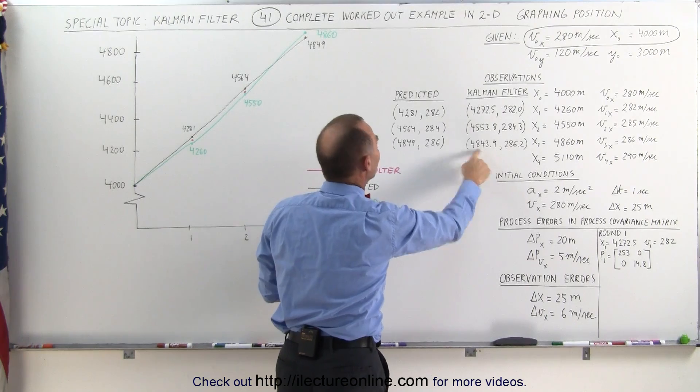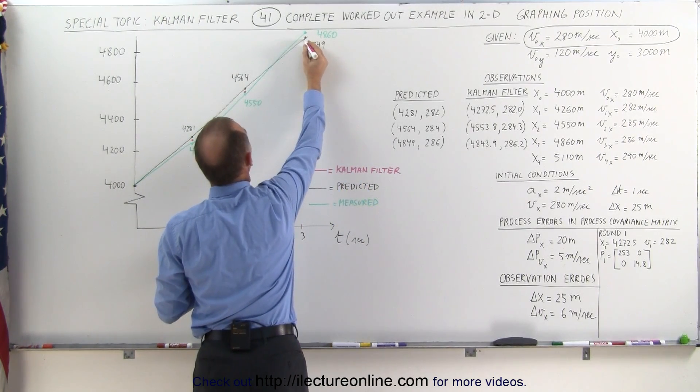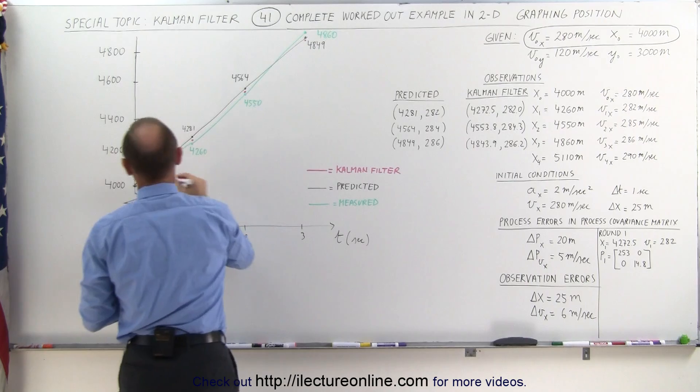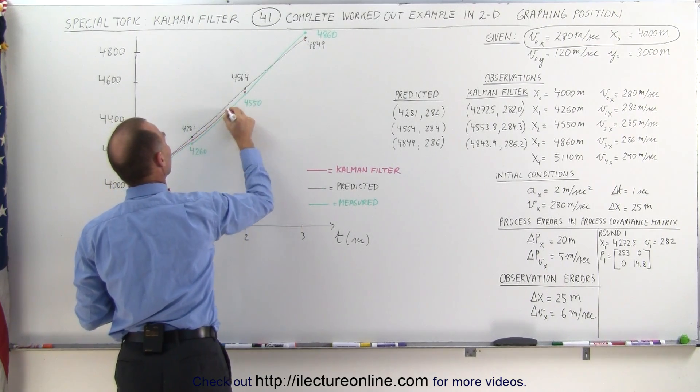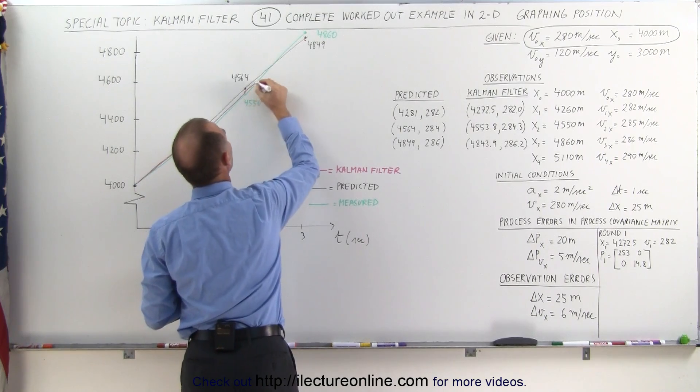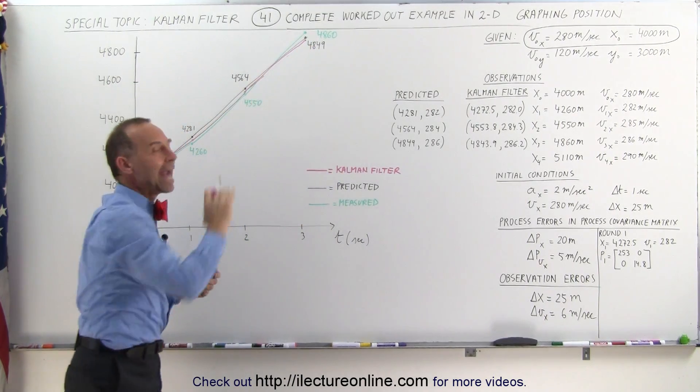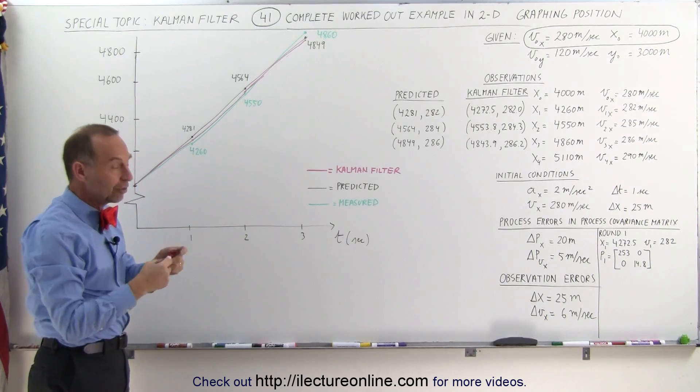You had 4844, which would put you just below the predicted value. And notice then, the Kalman filter smooths things out quite nicely and comes up with very smooth action from the Kalman filter.